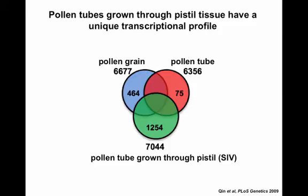In collaboration with Ravi Palani-Bailu's laboratory at the University of Arizona, we used microarray analysis to define the changes in the pollen tube transcriptome that could be responsible for the physiological changes that occur as pollen tubes grow through the pistil. We found that pollen tubes that had grown through pistil tissue had a dramatically different transcriptome, expressing about a thousand genes that were not detected in pollen grains or pollen tubes grown in vitro.